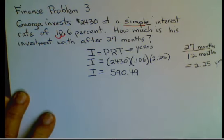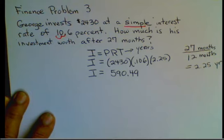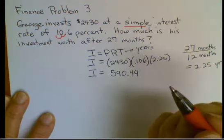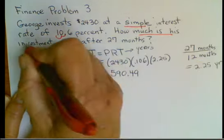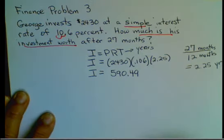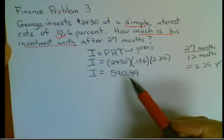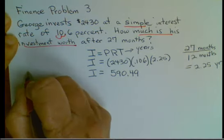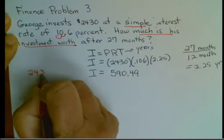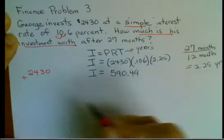You have to watch out and make sure you answer the entire thing. It asks how much is the investment worth. So your principal has to be added back on that. So originally your principal was 2430. Add that to your interest.